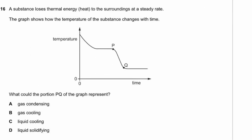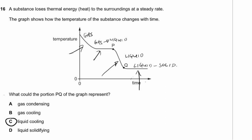Question 16. A substance loses thermal energy at a steady rate. Looking at the cooling curve with points P and Q: the graph shows a gas cooling, then a plateau as gas condenses to liquid, then the liquid cooling, then a plateau for liquid solidifying. The portion PQ represents a liquid cooling down. The answer is C.